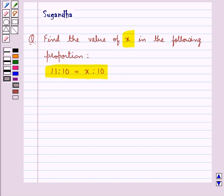Now we know that the four numbers, say a, b, c, d, are in proportion, as in a is to b is proportional to c is to d.